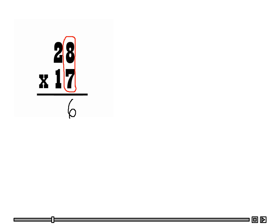In the tens place we are going from right to left, so in this case we are going to move from the ones to the tens and carry 5 over to the tens place. Now we are going to multiply 7 times 2 tens, so 7 times 2 is 14, plus 5 is 19.